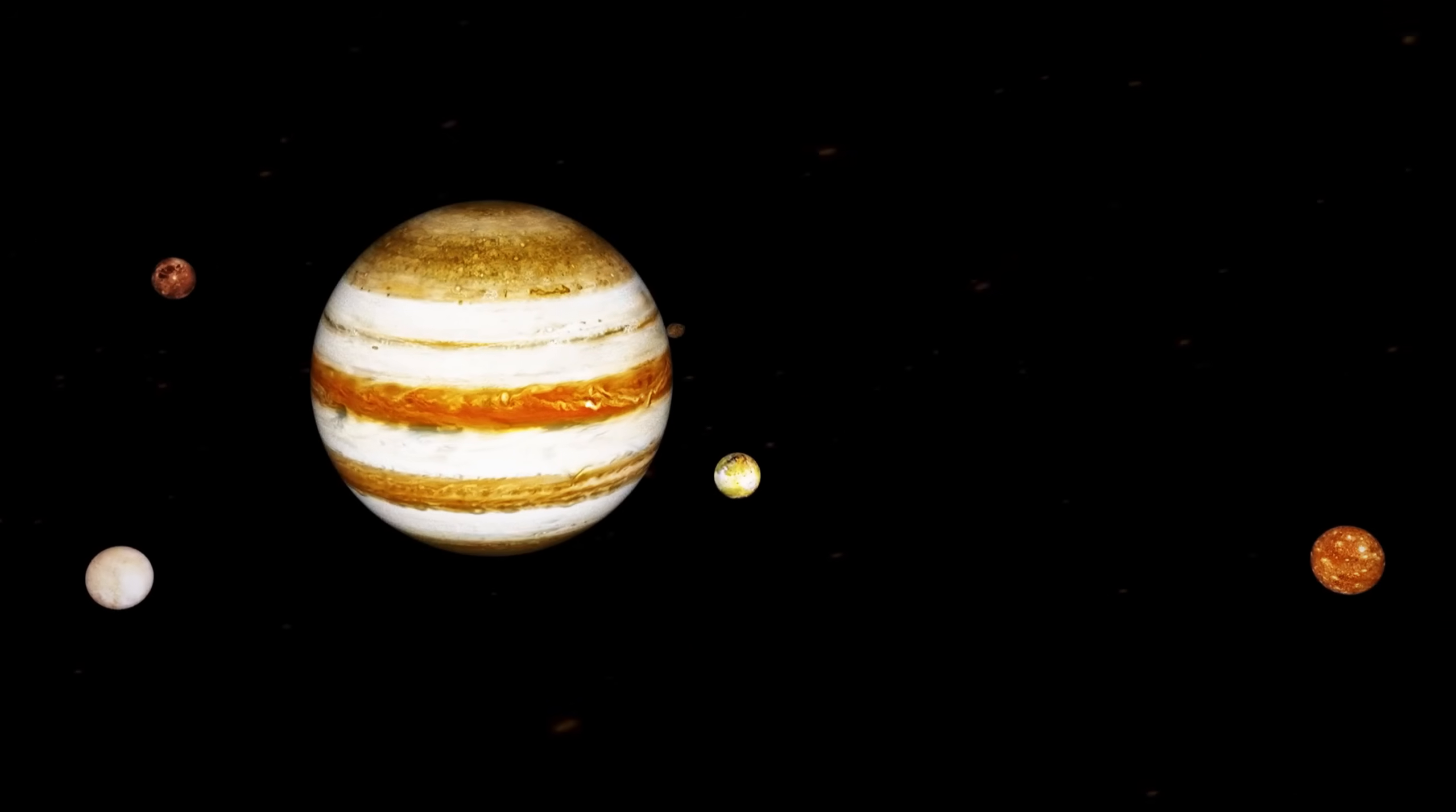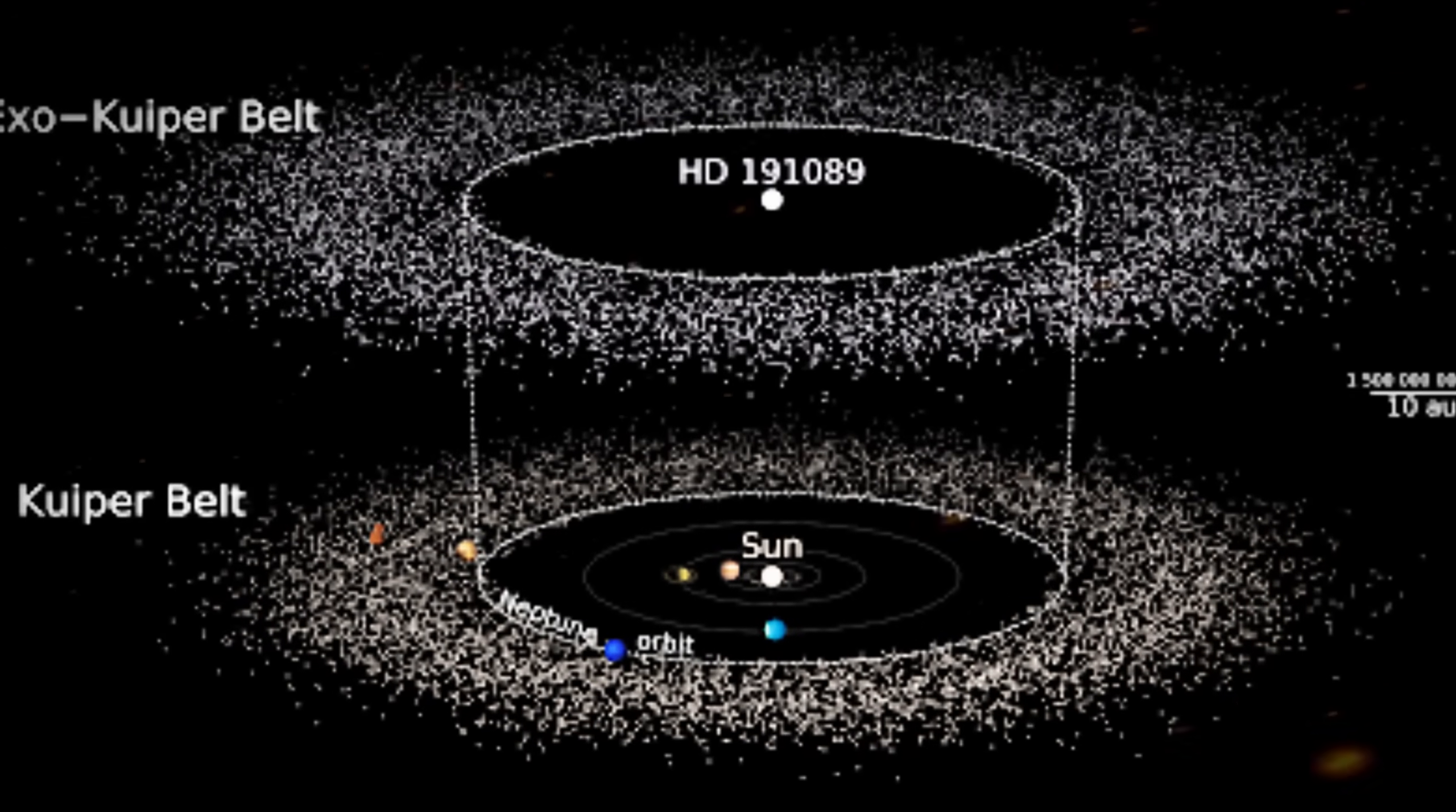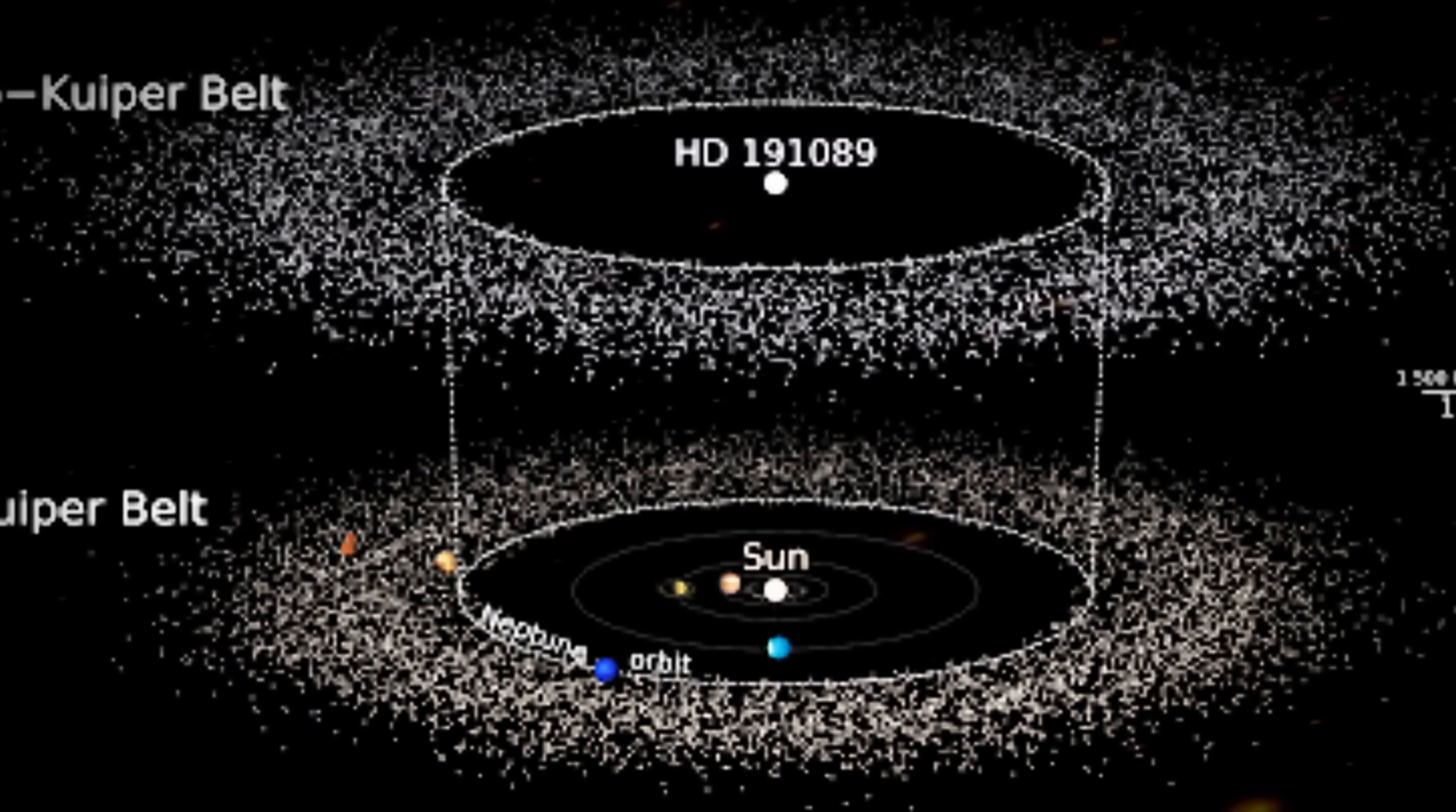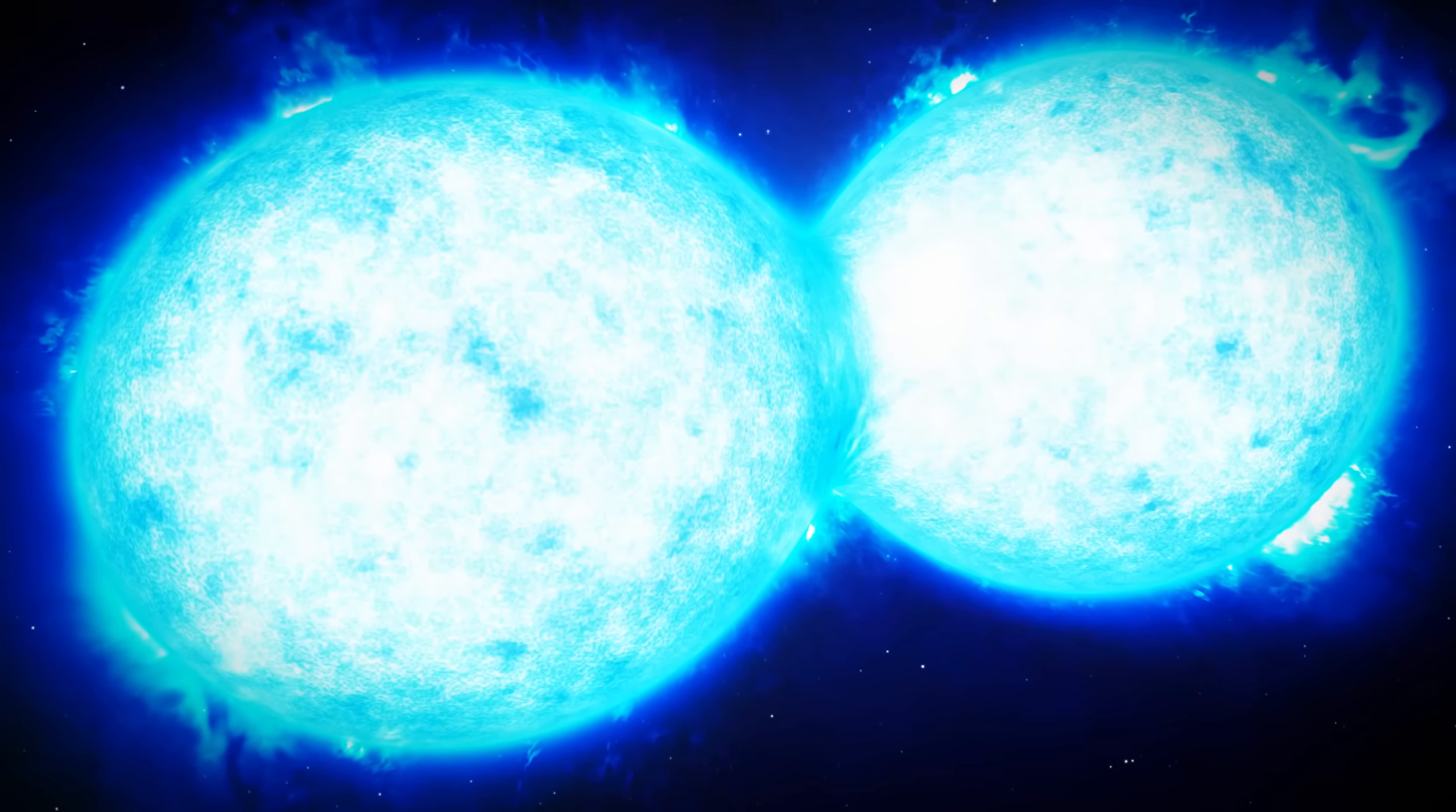Many Kuiper Belt objects have moons, smaller bodies that orbit a larger central object. Some KBOs even form binary systems, where two objects of similar size orbit a shared center of mass. In some cases, these objects are in physical contact, creating what's known as a contact binary.